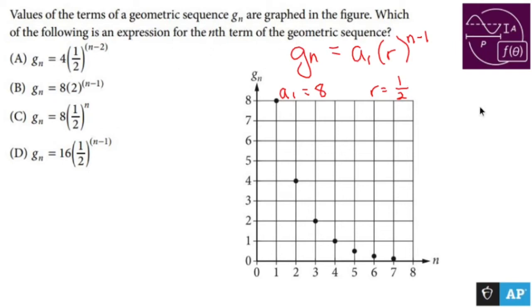We have to find the nth term, so n is still n. So let's put it all together. G sub n equals a, which is 8, times 1 half, because it's r, to the n minus 1. And you're like, oh, hooray, yippee, I've got it. And so you realize this is none of those.